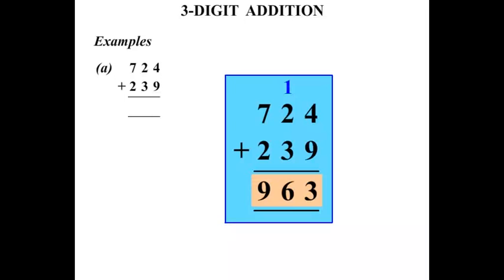So our answer there, 963. Too easy. Part B.